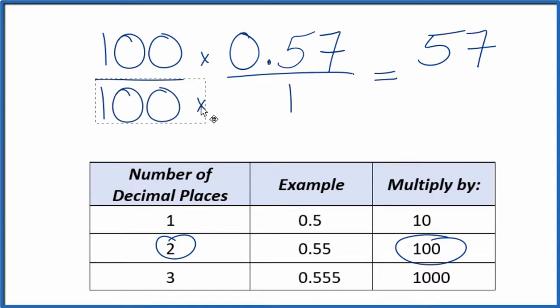So I put 100 over 100, and that just equals 1, so I'm multiplying by 1. I don't change the value, it's just that now I'll end up with a fraction. So 100 times 1 is 100, and there's our fraction: 57 over 100. The decimal 0.57 equals the fraction 57 over 100.